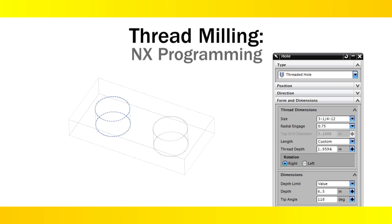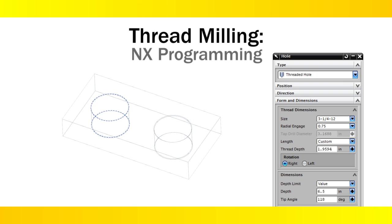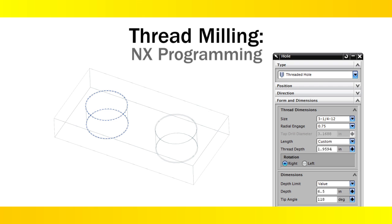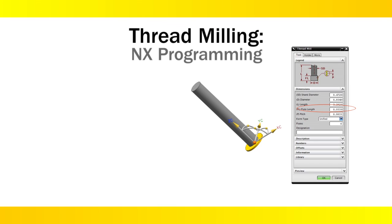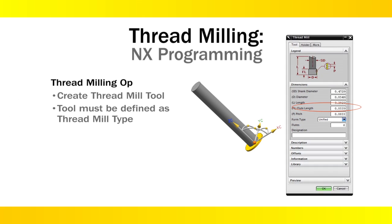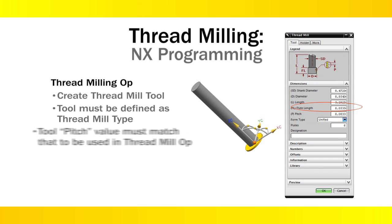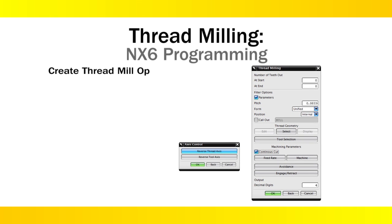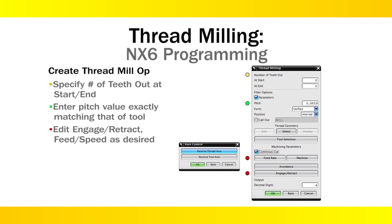With the thread milling operation, first create a threaded feature in the modeling application and specify the parameters of the thread desired. In this example, a threaded hole is created. Next, in the manufacturing application, create a thread tool with the same pitch specified as that of the thread feature. For NX6 CAM programming, follow these steps to produce a thread milling toolpath: specify the number of start and ends, the pitch, the engage and retract, and then select the hole geometry on the screen.